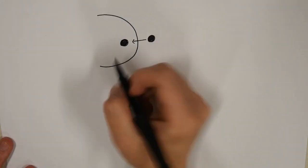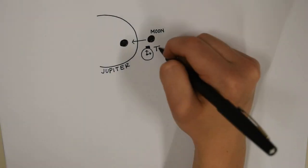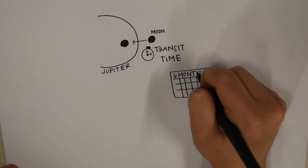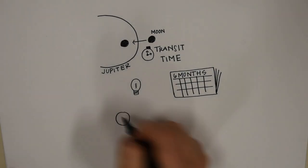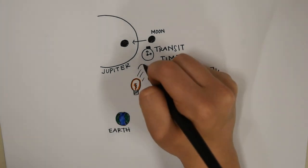This allowed him to calculate what time exactly a given moon should transit in front of Jupiter six months later, assuming that the speed of light is infinite. This assumption was necessary because if the speed of light was infinite, the light would reach us the instant the event occurred.